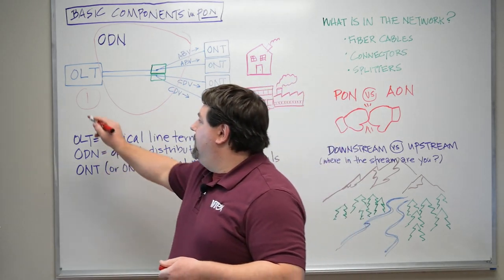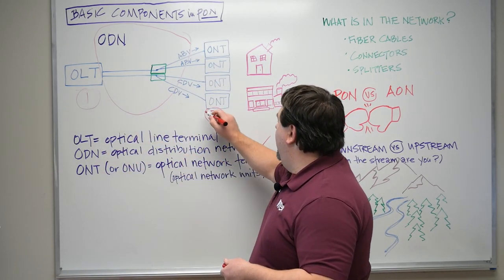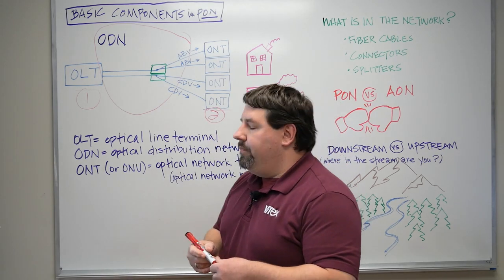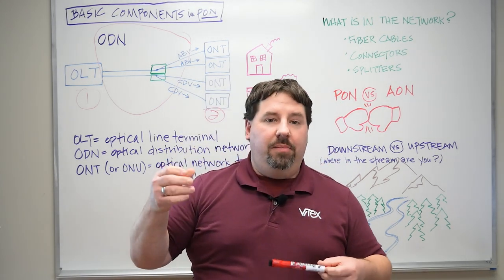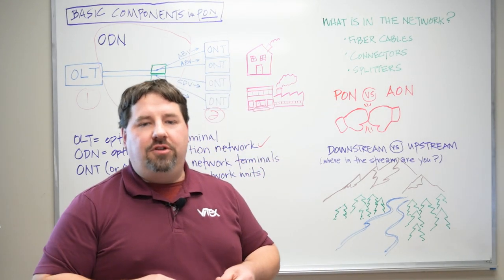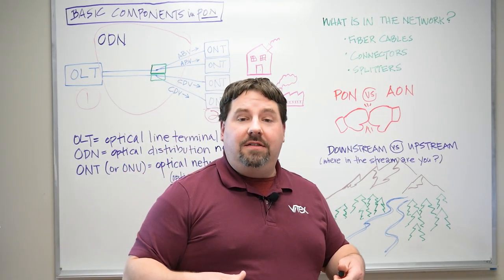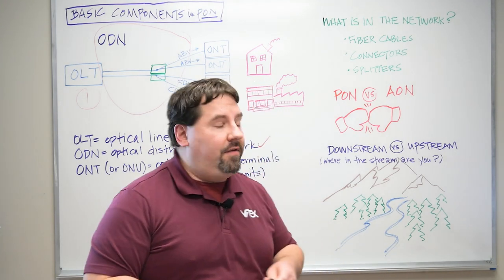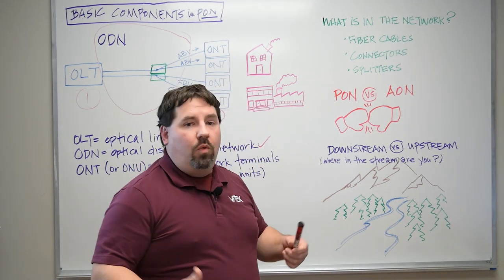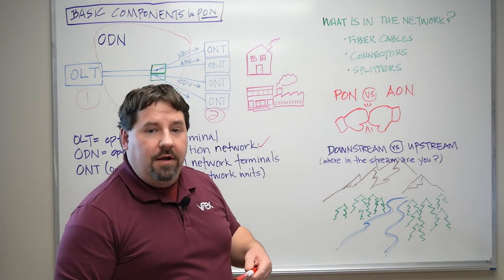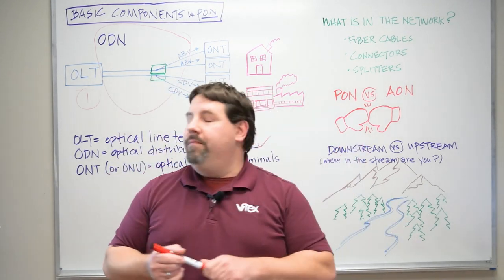It's important to understand how our terminals and our end units will actually be sending and receiving all the information, and they're going to house things such as the transceivers, which we're going to talk about in another video. But today we want to really focus on what's in the network, and there are three main things that make up this network.